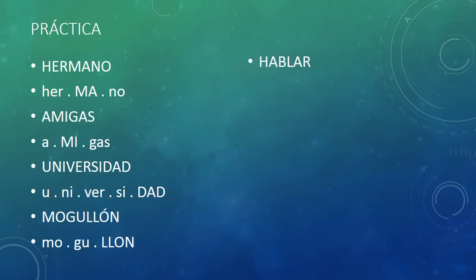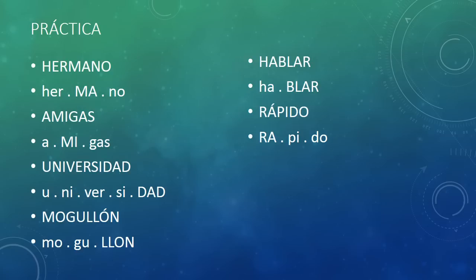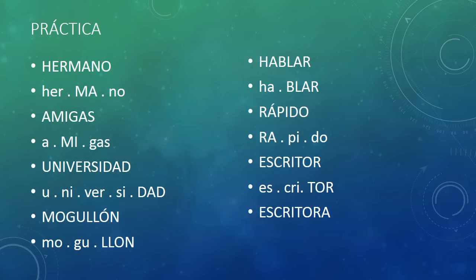What about this one? It ends in an R, so that's not ending in a vowel, N, or S — so the last syllable is stressed. And this one? Simple enough — it has an accent mark. Rápido. And if it didn't have that accent mark, the middle syllable would be stressed — rapido — which isn't a word. The accent mark is over the A. What about escritor? It ends in an R, so it's the last syllable — escritor. And escritora — now it ends in a vowel, so the second to last syllable gets stressed — escritora. The stress didn't change: escritor, escritora — same syllable, tor.